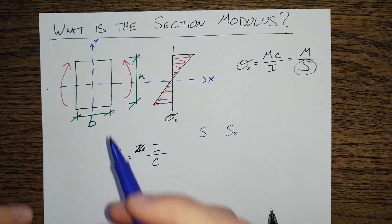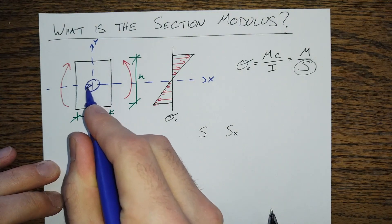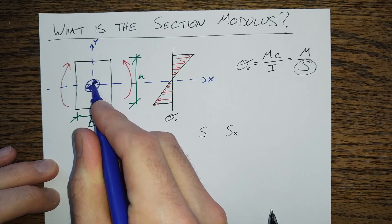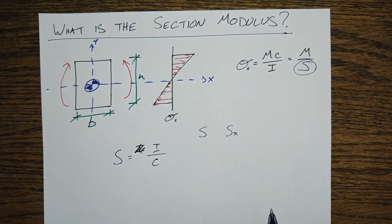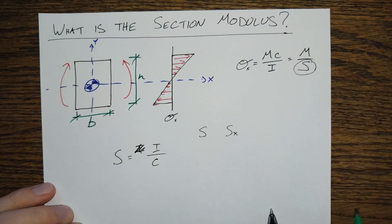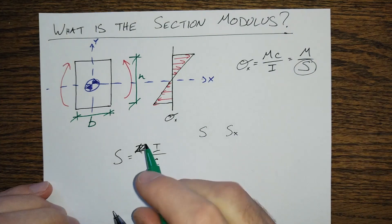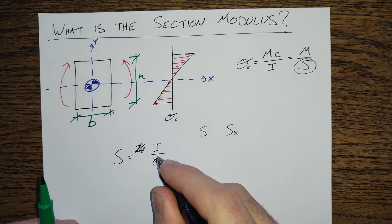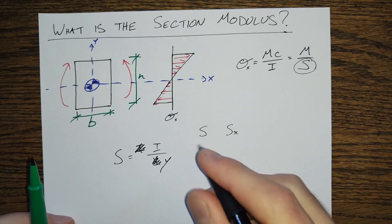So if we look here on this little rectangular cross section, there's our centroid, and we've got a distance C up to the... C should not be C, C should be Y.